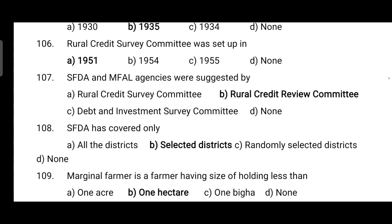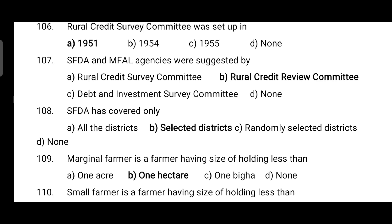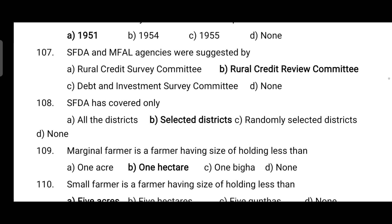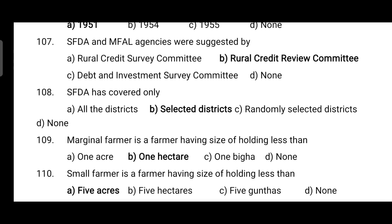A marginal farmer is a farmer having a size of holding less than one hectare. A small farmer is a farmer having a size of holding less than five acres. So small farmers have holdings less than 5 acres and marginal farmers have holdings less than 1 hectare.